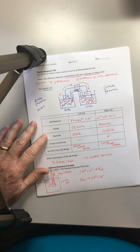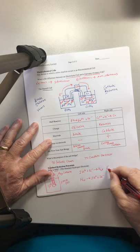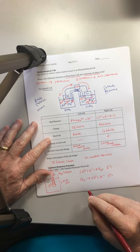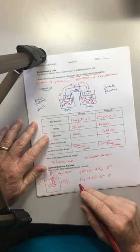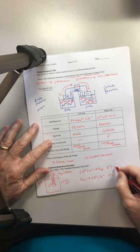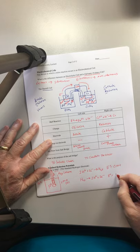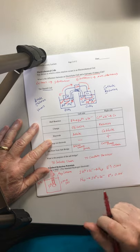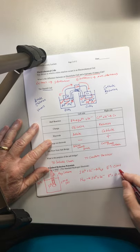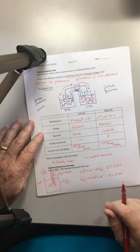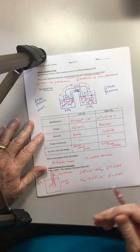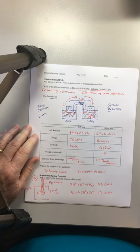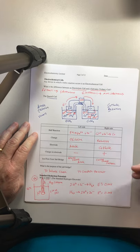Either way, by definition, we are going to define the electromotive force, or the standard reduction potential for that reaction to be 0.00 volts in either direction. So this is the reduction direction. This is the oxidation direction. It's going to be 0.00 volts either way, and every other reduction potential that we measure will be measured relative to those values.